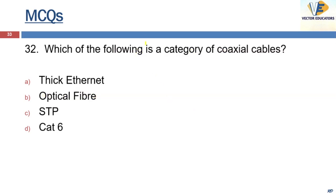Which of the following is a category of coaxial cable? Thick Ethernet is also called RG11 — RG stands for Radio Government.